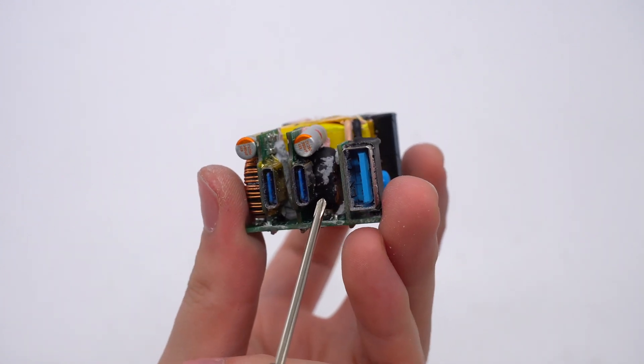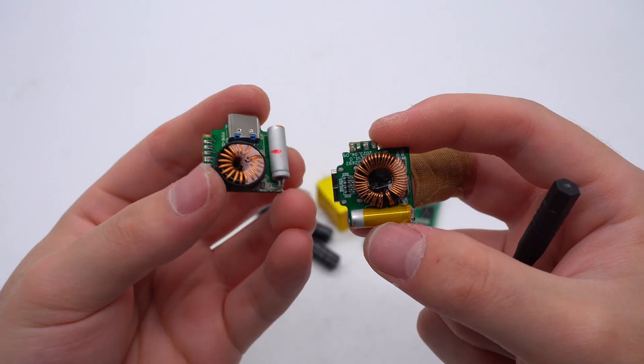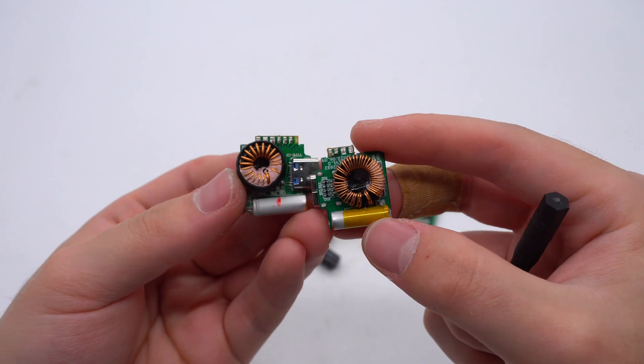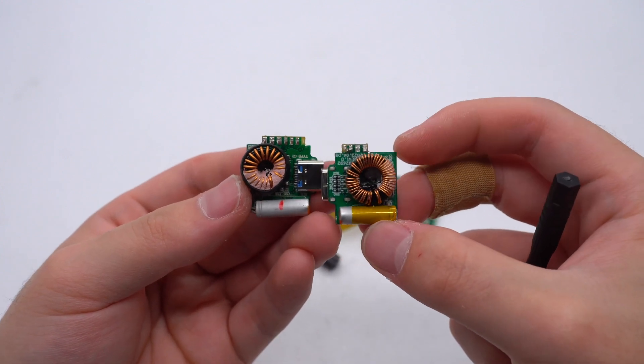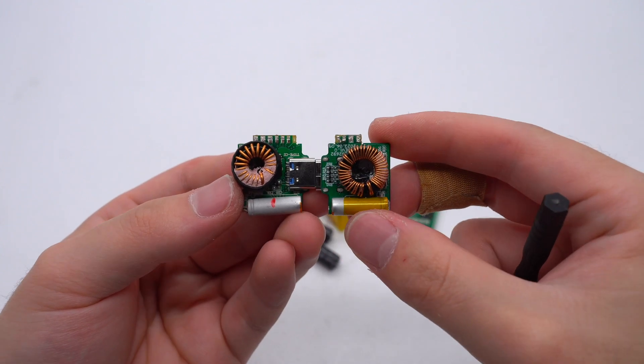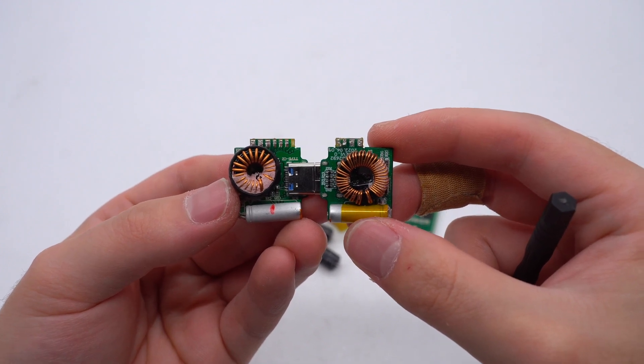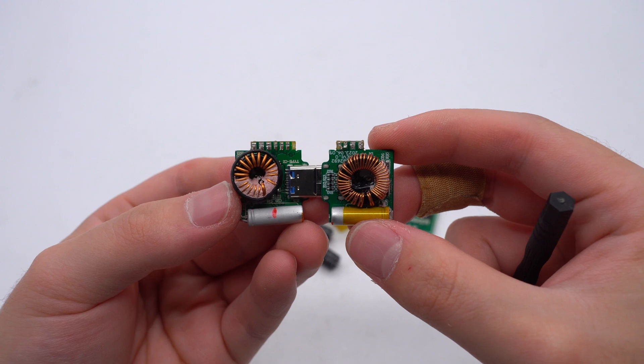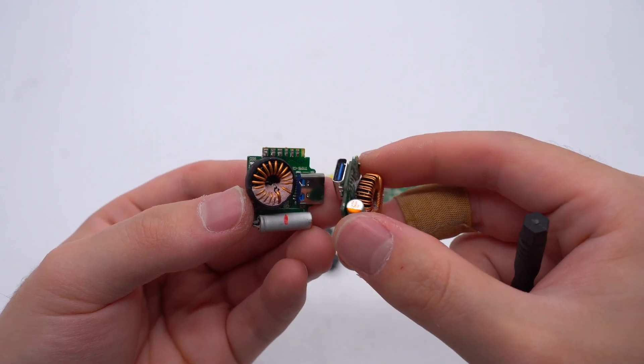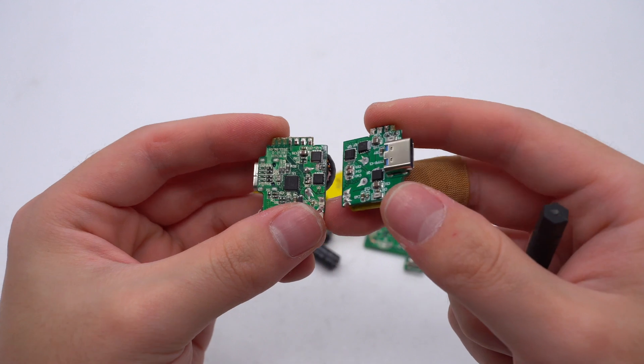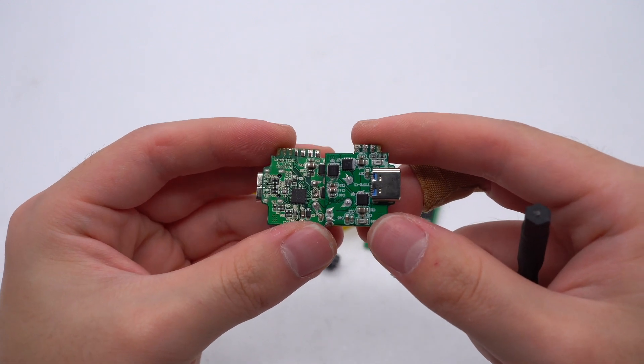The output end has three small PCBs. There are buck PCBs of USB-C1, C2 and USB-A. The inductor of USB-C2 and USB-A is wrapped in heat shrinkable tubing. There are buck inductors and solid capacitors on the front. The solid capacitor for output filtering is insulated by tape. There are USB-C circuits and MOSFETs on the back.